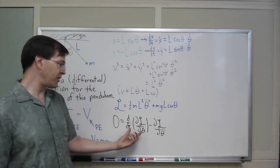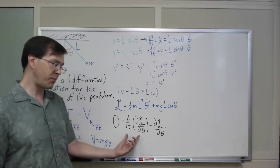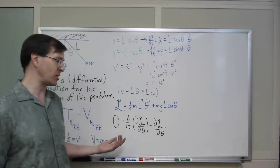Minus dL d theta. The derivative of the Lagrangian with respect to the coordinate is negative, and the time derivative of the Lagrangian with respect to the time derivative of the coordinate, theta dot, is positive. Those have to combine to zero.